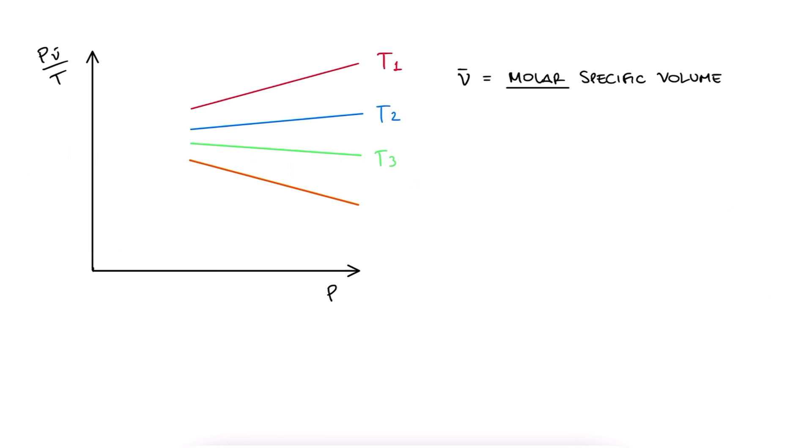T1, T2, T3, etc., and they all converged for really low pressure values. So if we take the limit of PV over T when P approaches zero, we find that that constant all curves converge to is what we define as the universal gas constant, R bar.